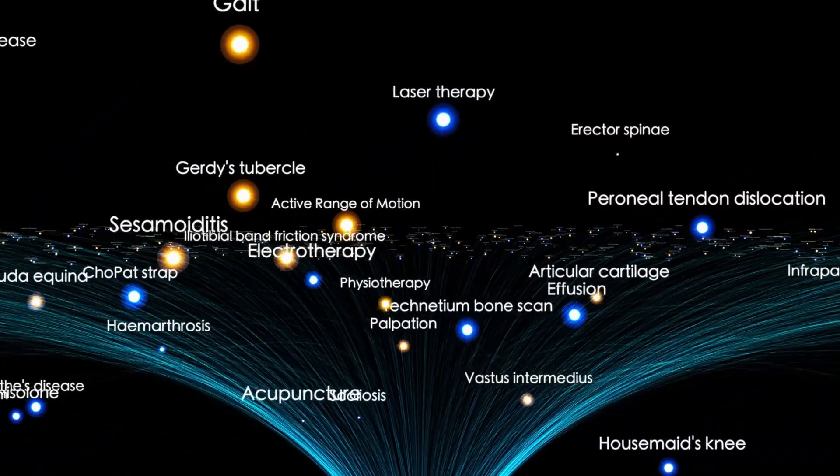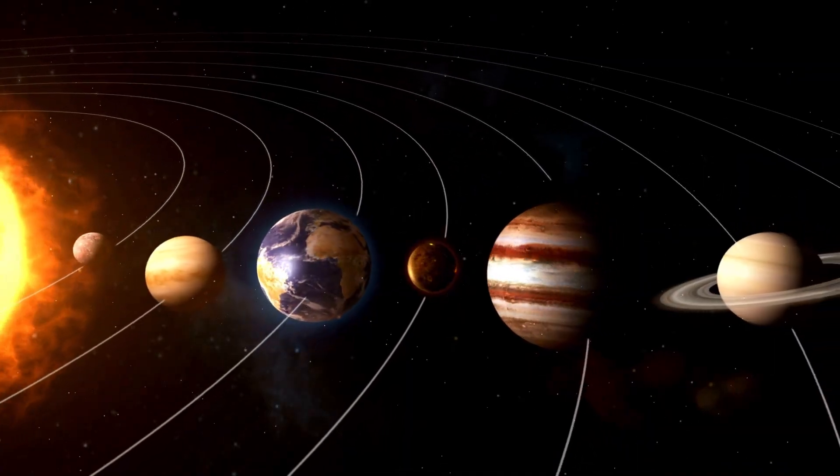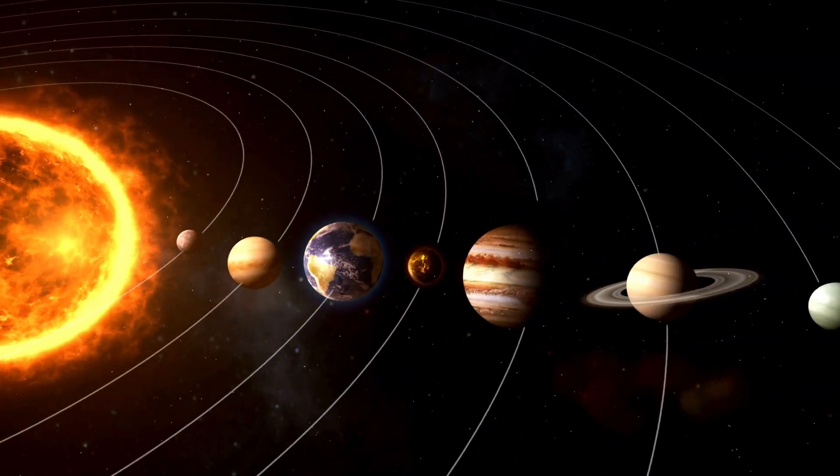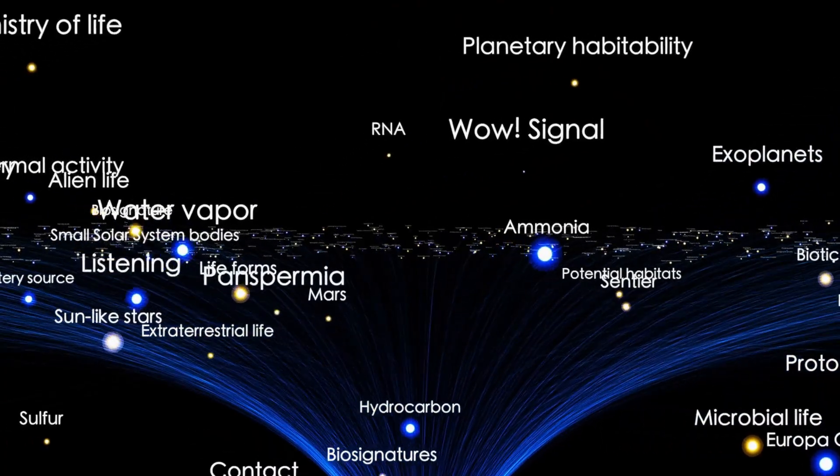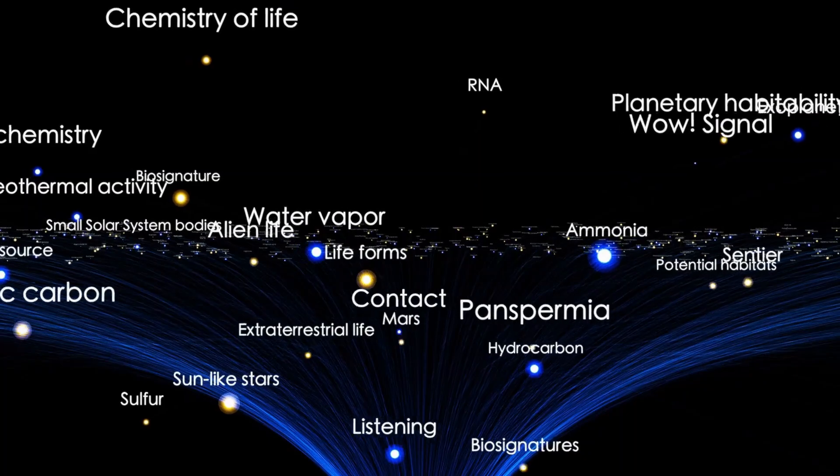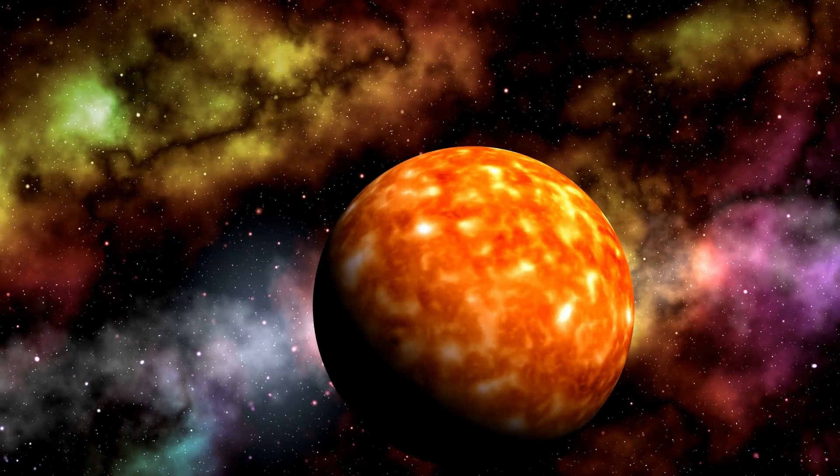As these jets interact with the sparse intergalactic medium, they don't move in straight lines. Instead, they bend and sway, creating vast arcs that some astronomers have described as resembling a slow cosmic dance.